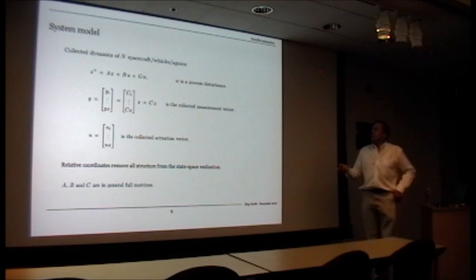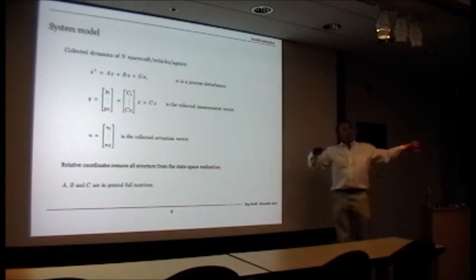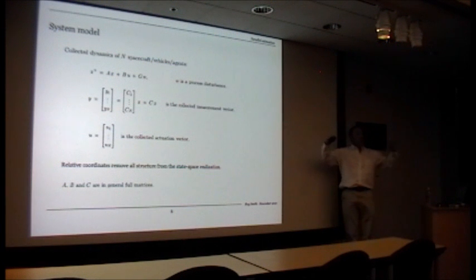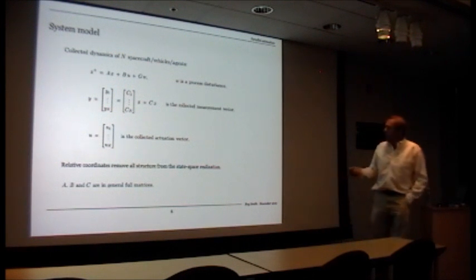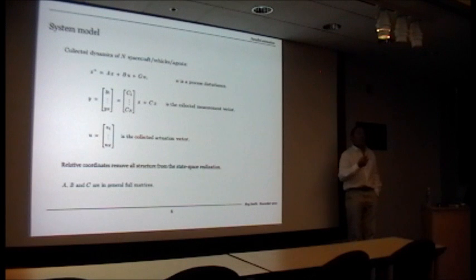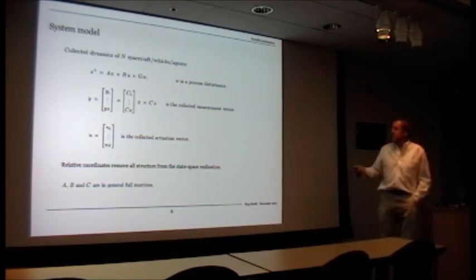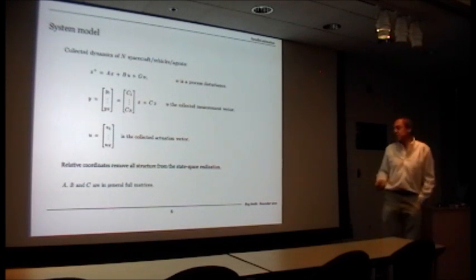We can write down this vector of measurements. With each spacecraft, there's a C matrix. And X here is the full formation state - everybody's positions and velocities. Where are all your spacecraft? How are they moving? So that's a very big vector of positions and velocities. Each spacecraft can move its own position and velocity. U is their actuation, divided up amongst the N spacecraft.